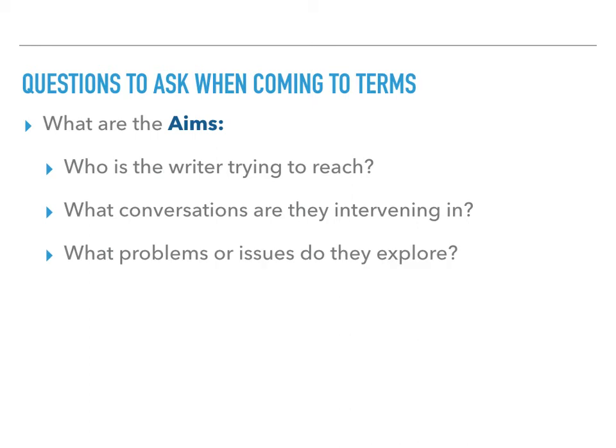The third question is: what problems or issues do they explore? Sometimes this is identical to the conversation or intervention, but not always, and it's not necessarily the same thing as the topic or subject matter, though sometimes it is. Fourth is the position that the author wants to argue. The more complex the text, the more different things someone might think the author is arguing, but usually there will be one clear statement about the author's major position. It's worth noting that an argument is never just a topic — it's always a statement about the topic that other people could reasonably disagree with. We usually call this a thesis, but a position might be bigger than just the thesis and might have several different statements.